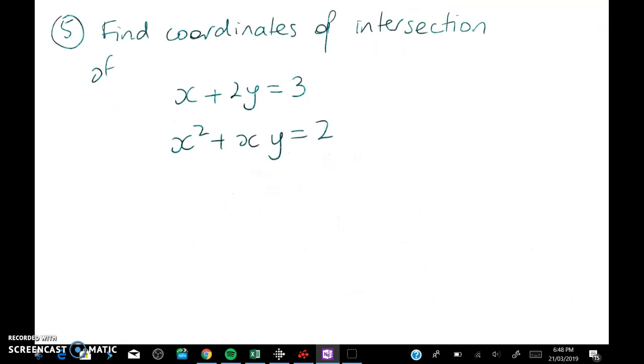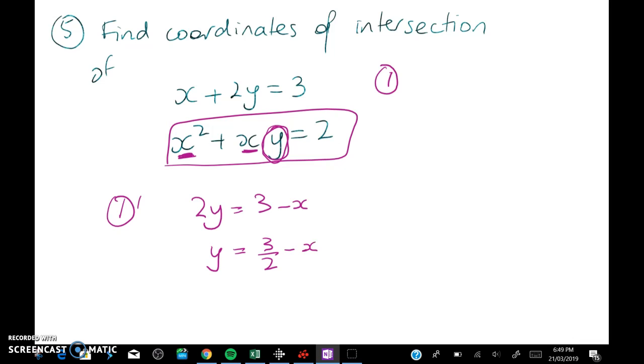The last question is a simultaneous equations question. There are two ways that we can go with simultaneous equations. We can use elimination or we can use substitution. So in this case what I'm going to do is I'm looking at this here. I'm going to substitute something into here. Now I've got lots of x's. I've got x squared and I've got x. So what I'm going to choose to do is to substitute in the y. That means that I'm going to take equation 1 and rearrange it and we'll call it equation 1 dash. So we get 2y is equal to 3 minus x. y is equal to 3 over 2 minus x over 2.